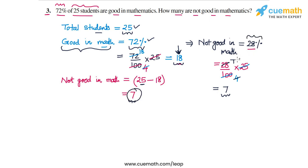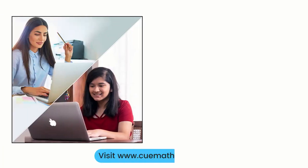In the second approach, we find the percentage of students not good in mathematics: 100% minus 72% equals 28%. We then convert this into an absolute number — 28% of 25 — which gives 7. Both approaches give us the same answer: seven students are not good in mathematics. With that, question 3 is completed.